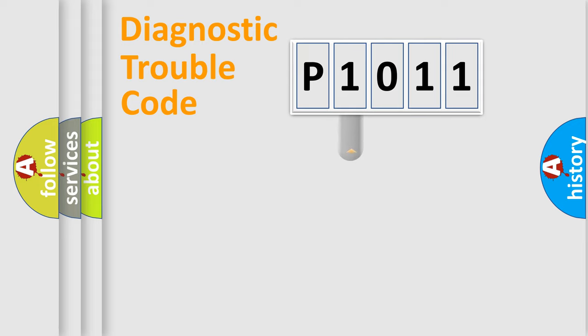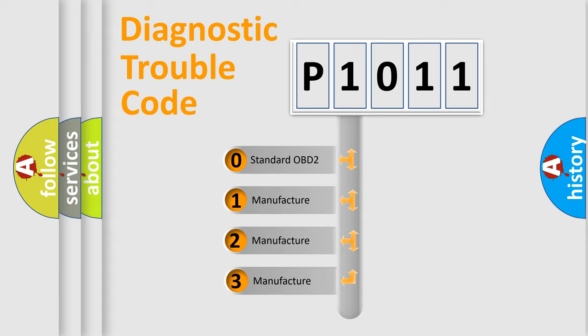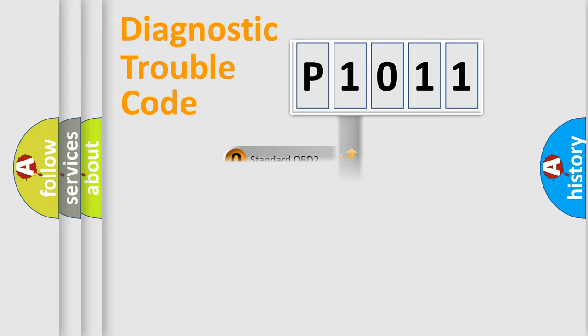This distribution is defined in the first character code. If the second character is expressed as zero, it is a standardized error. In the case of numbers 1, 2, or 3, it is a more prestigious expression of the car-specific error.